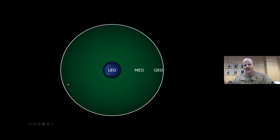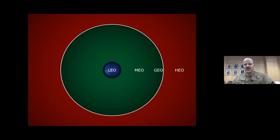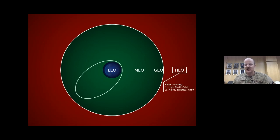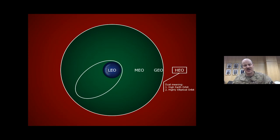There's actually one more orbital regime: HEO, or highly elliptical orbits. Those highly elliptical orbits look like an ellipse. I wanted to introduce these terms because you're going to see them throughout the course — you might even see them in the news, where they talk about things being in low Earth orbit or in GEO. Each of these orbital regimes has utility for us that we're going to exploit, and they have unique advantages.